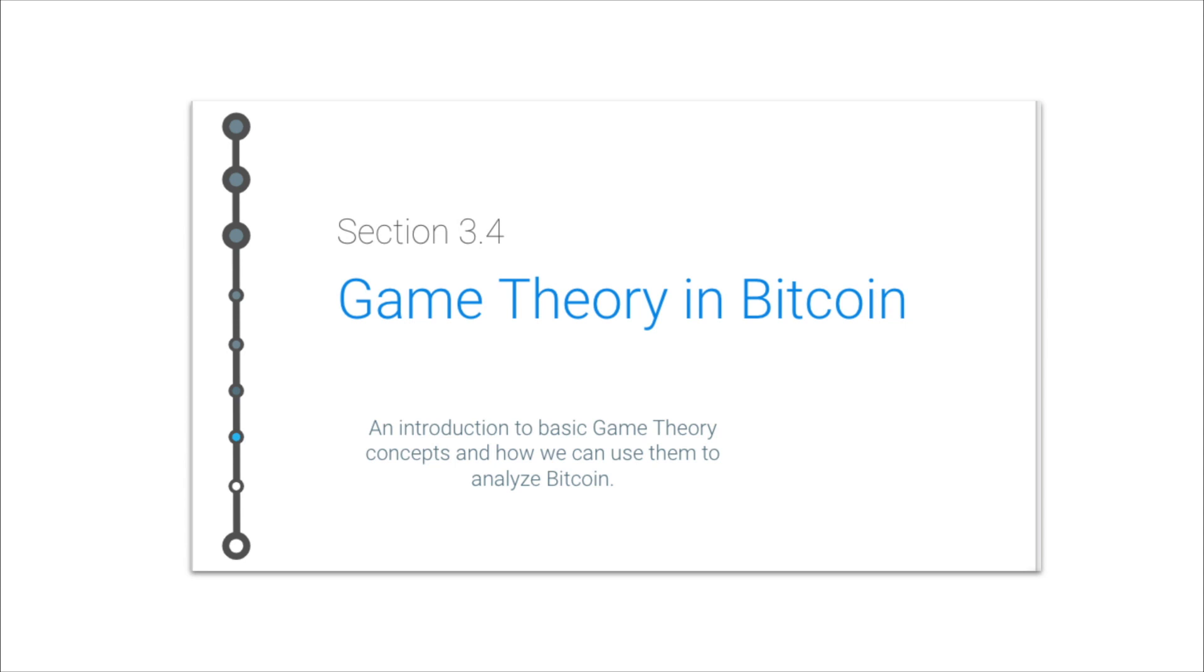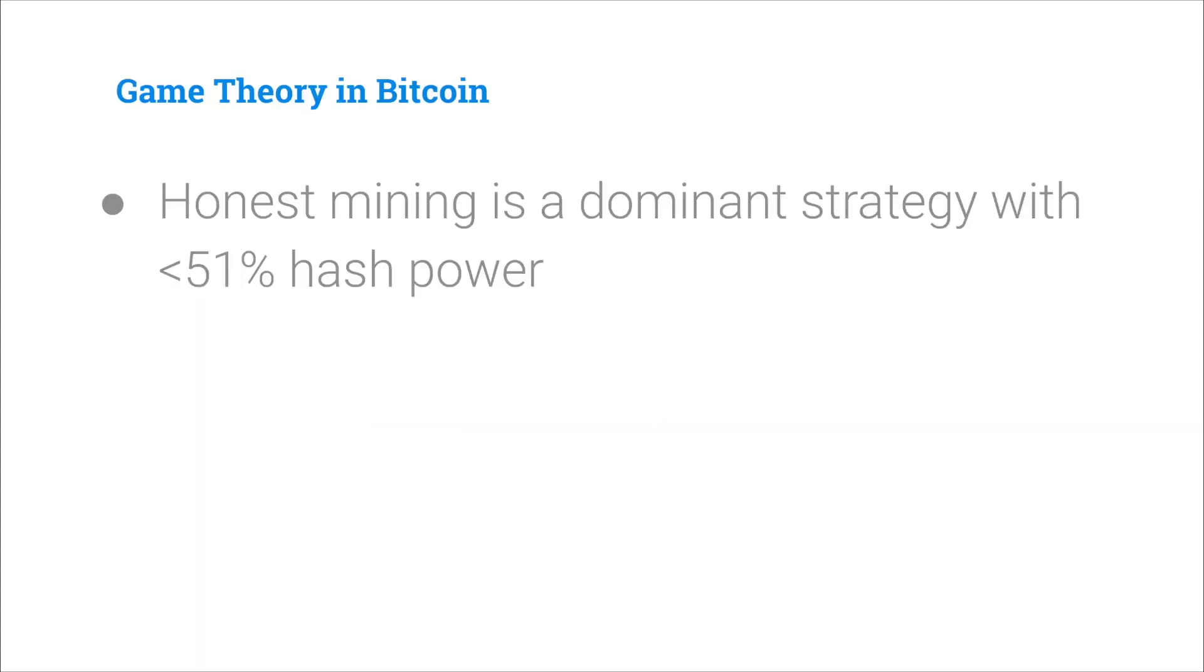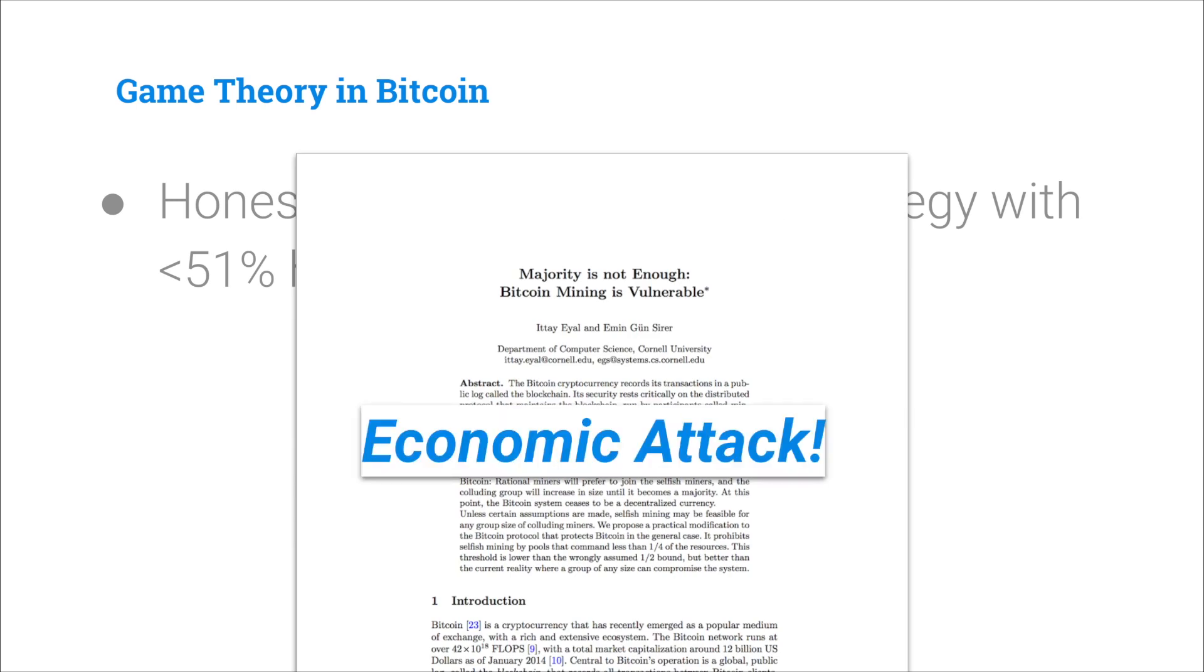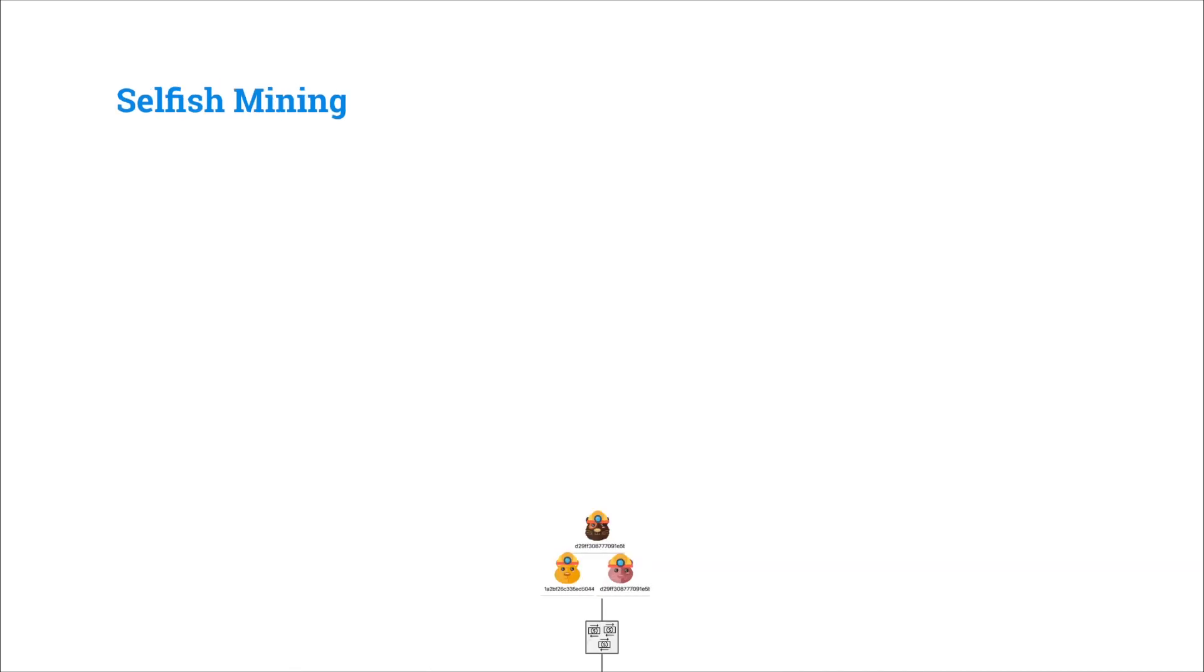Now, analyzing Bitcoin in this game-theoretic way helps us come up with what kind of attacks Bitcoin might be vulnerable to. Now, many people, especially in the early days of Bitcoin, might have believed that honest mining is a dominant strategy as long as you don't have a majority of power and can't revert history or censor users. But in 2013, researchers from Cornell University came up with an economic attack on Bitcoin that violates this assumption called selfish mining.